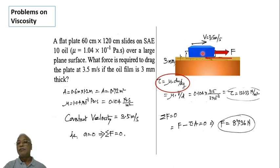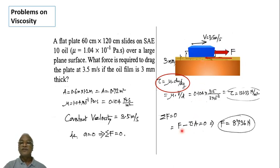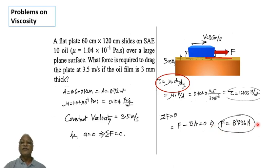Taking rightward forces as positive and leftward as negative: plus F minus tau into A equals zero. Substituting tau as 121.33 and area as 0.72 meter square gives F equal to 87.36 Newtons. This is the force required to keep the plate moving at a constant velocity of 3.5 meter per second.